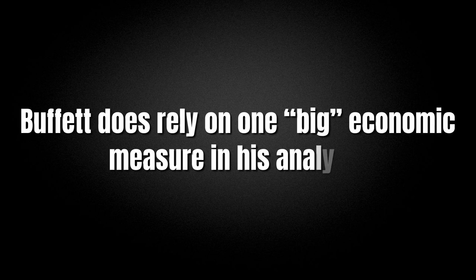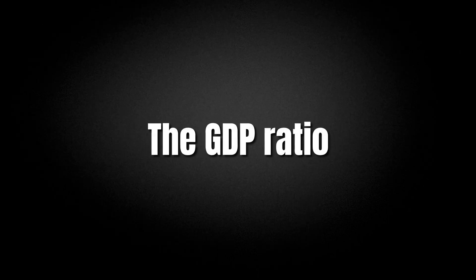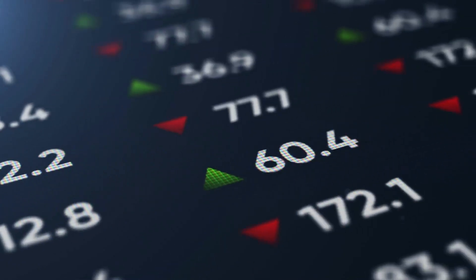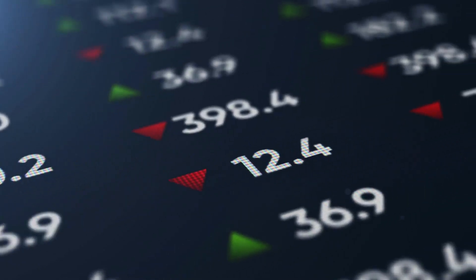However, there is one exception to this rule. Buffett does rely on one big economic measure in his analysis, the GDP ratio. This is used to compare the price to what the businesses are producing.